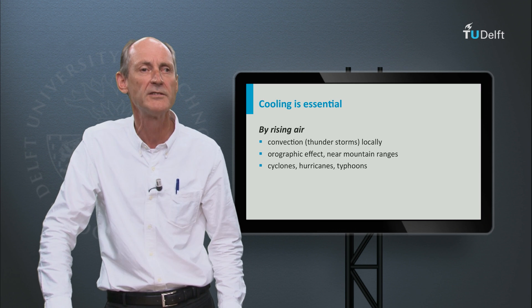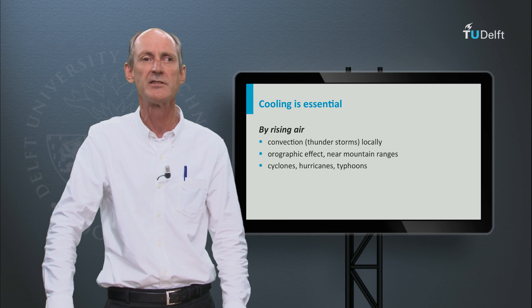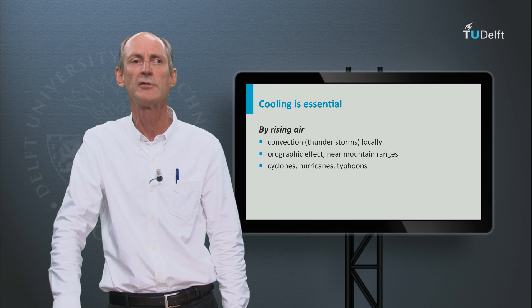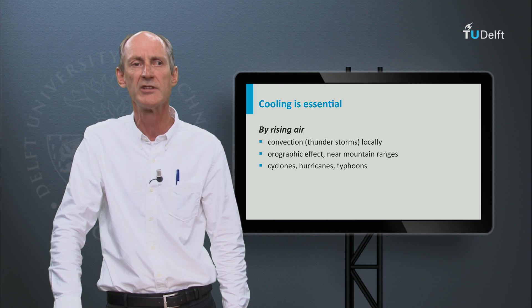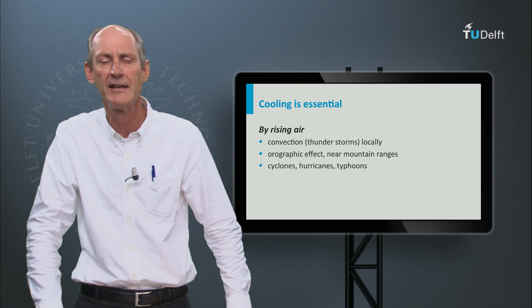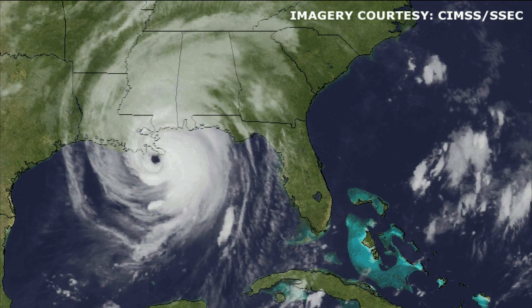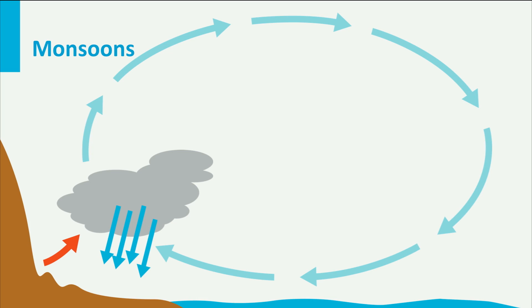Do you know what the difference is between them? Well, there is no difference. It is just that their names are linked to the different oceans that generate them. The Indian Ocean has cyclones, the Pacific has typhoons, and the Atlantic has hurricanes. Here you see a movie of Hurricane Katrina, which caused havoc in New Orleans. And then there are the monsoons, governed by the difference in cooling between land and ocean in the tropics, causing sea breezes that carry moist air inland.